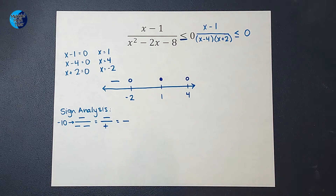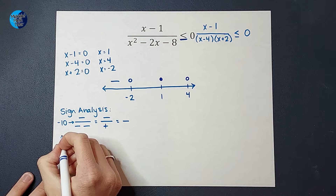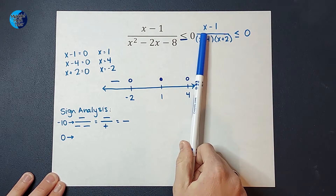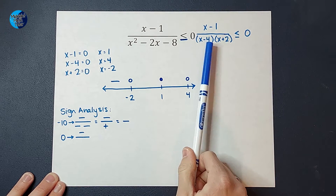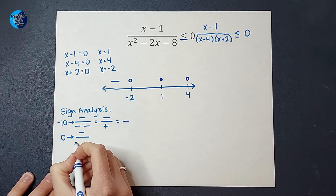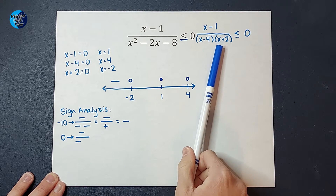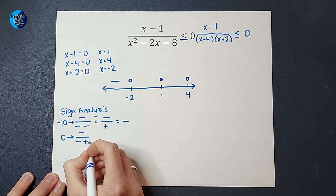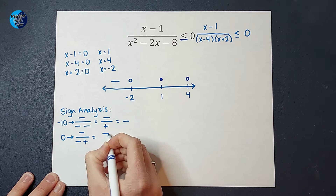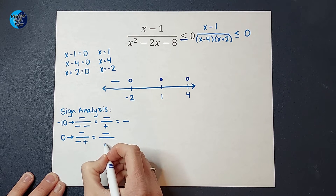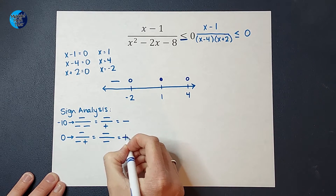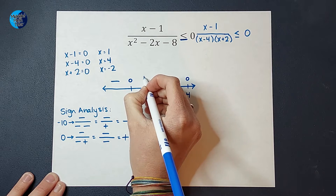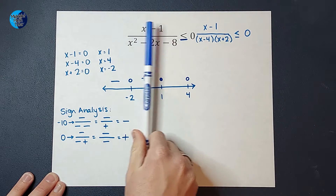Now I want to pick a number between negative 2 and 1 — let's pick 0. When I plug in 0: 0 minus 1 gives a negative on top. 0 minus 4 gives a negative on the bottom, and 0 plus 2 gives a positive on the bottom. So I've got a negative on top, and a negative times a positive on the bottom, which is negative. A negative divided by a negative is positive. So this region is positive.